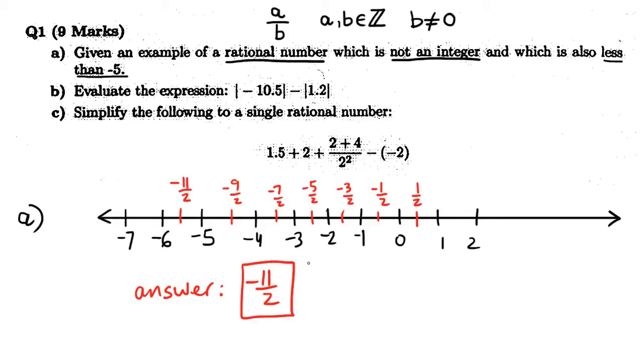If you try to use something like negative 12 over 2, that's actually not a good answer. Because even though this is a fraction, it looks like a fraction, it's really just the same as negative 6, right? And that's an integer. And we're told that we are not allowed to use integers there. So, this would be a perfectly fine example. Let's move on to the next one.